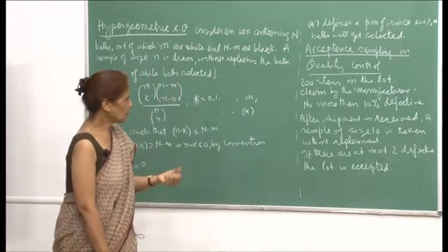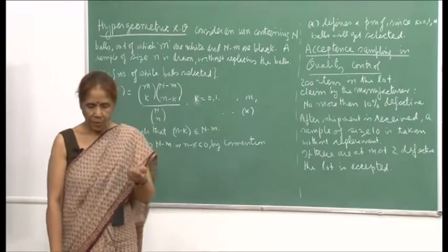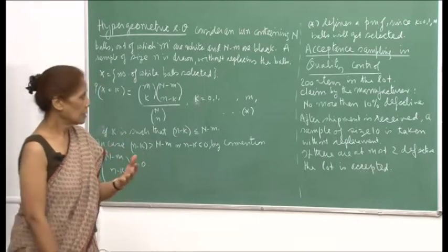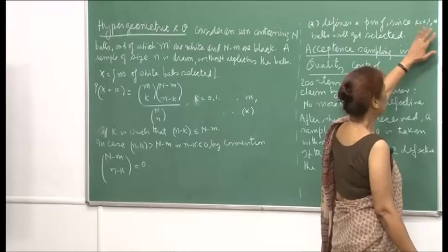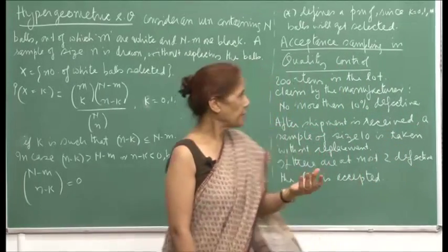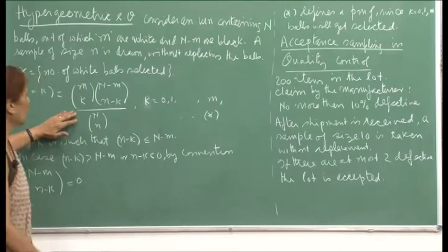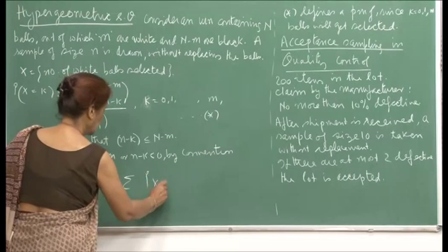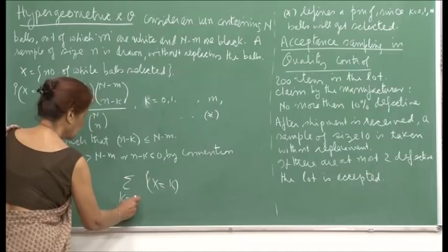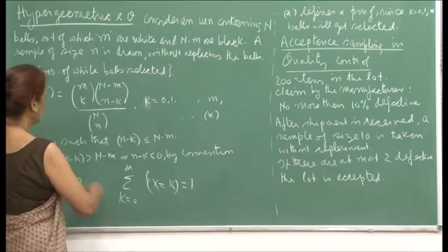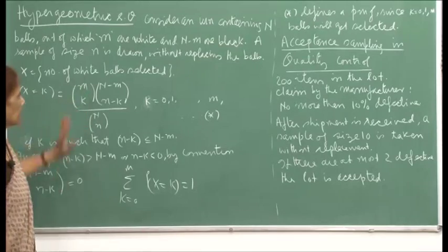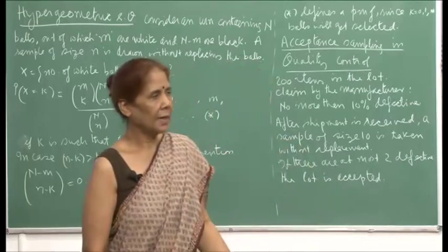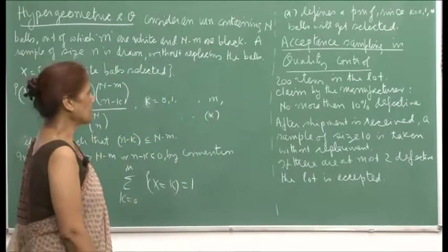Since we are drawing out a sample of n balls, a white ball may appear or may not appear — white balls numbered 1 through m may appear or may not appear — this takes care of all possible cases. Therefore, the summation of probability x equals k for k varying from 0 to m equals 1, and these probabilities are all non-negative. So this is a valid PMF.